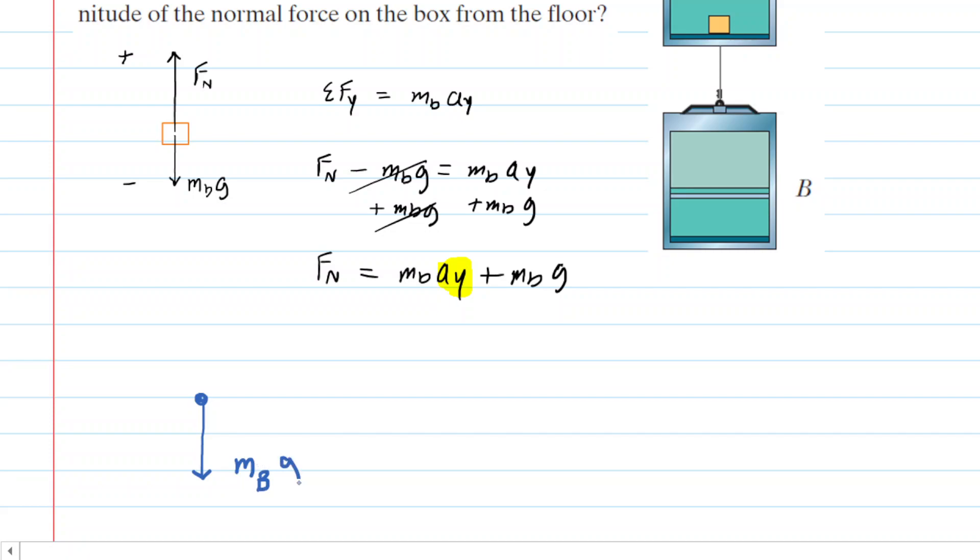That is the gravitational force pulling down on cab B. And then we also have this cable right here that's connected to cab B and there's some tension in that cable, so we're going to represent that as a T. And then once again we'll assume upward is positive, downward is negative.